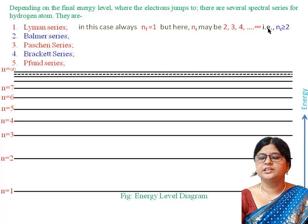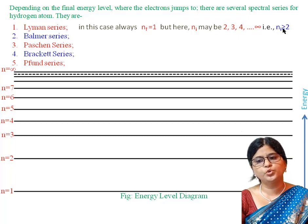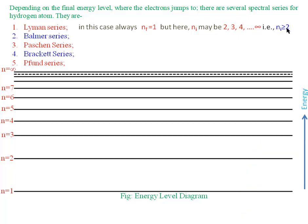When electron transition takes place from energy level 2 to 1, we get one spectral line. Then from 3 to 1, 4 to 1, 5 to 1, 6 to 1, and so on till infinity to 1 — all of these transitions are called the Lyman series.